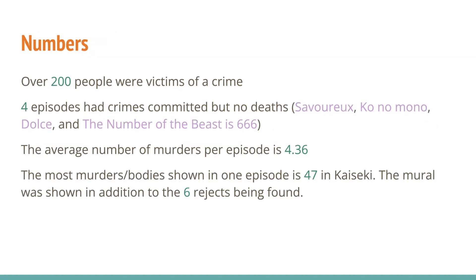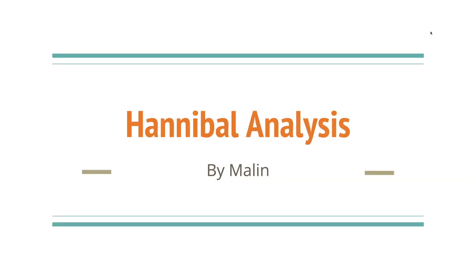The numbers of victims: over 200 people were victims of a crime. Four episodes had crimes committed but no deaths. The average number of murders per episode is 4.36. The most murders and bodies shown in one episode is 47 in Kaiseki — the mural was shown in addition to the six rejects being found. James Gray had 48 total because the one guy who escaped did die later. That's all I have for my Hannibal analysis. I hope you enjoyed this video. I currently have a video for Criminal Minds and I'm working on one for Forensic Files. Feel free to subscribe if you want to see more videos similar to this.